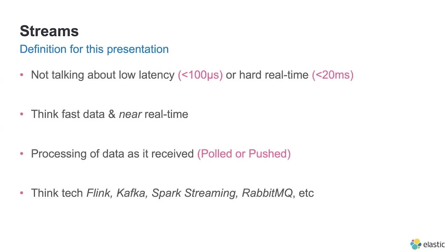As for streams, we're not talking about low latency — anything under 100 microseconds or hard real-time, which is less than 20 milliseconds. That's a separate presentation. We're talking about millisecond and sub-second latency — fast and near real-time. Think processing thousands of credit card transactions in a second. We're talking about processing data as it's received, either a consumer pulling it or having data pushed to it. The tech stack includes Flink, Kafka, Spark, and message buses such as RabbitMQ.